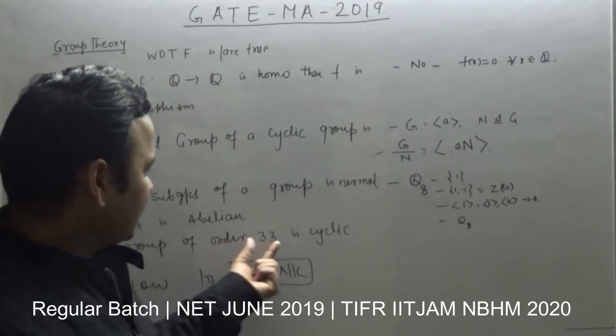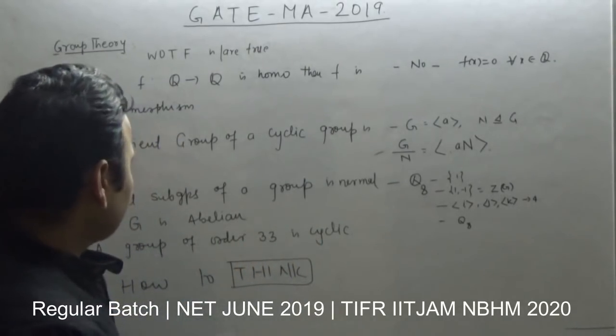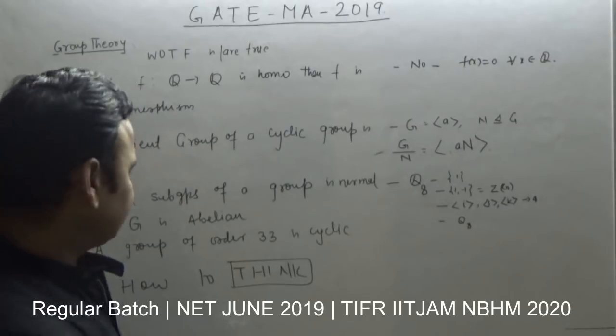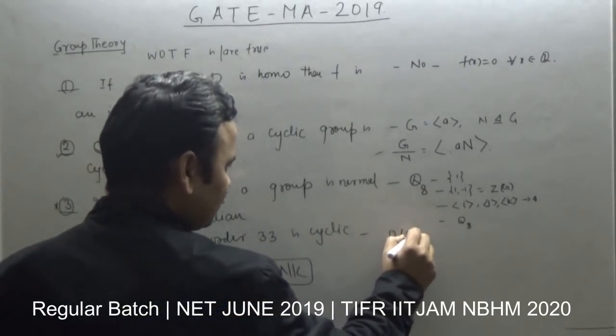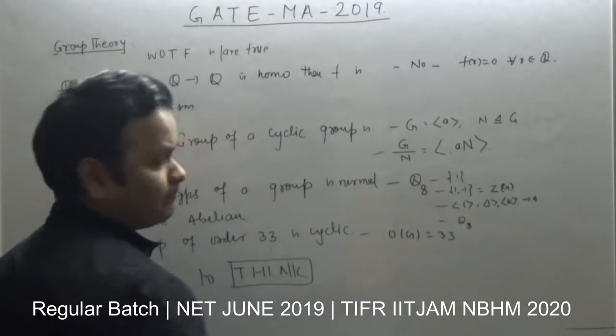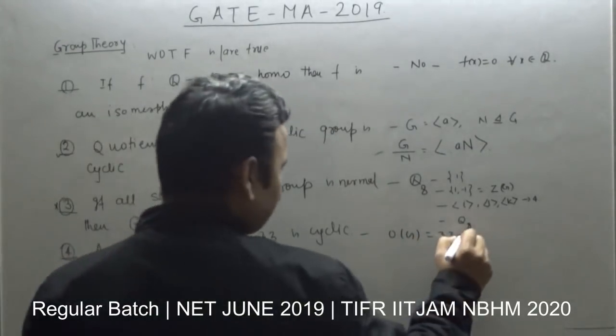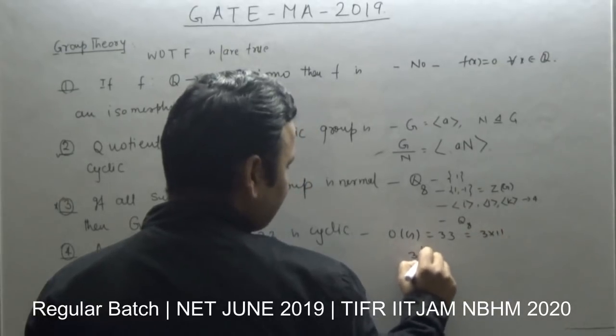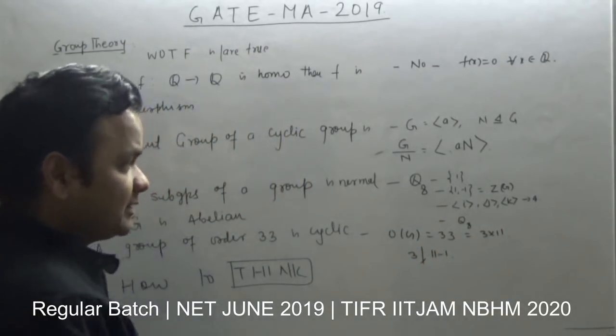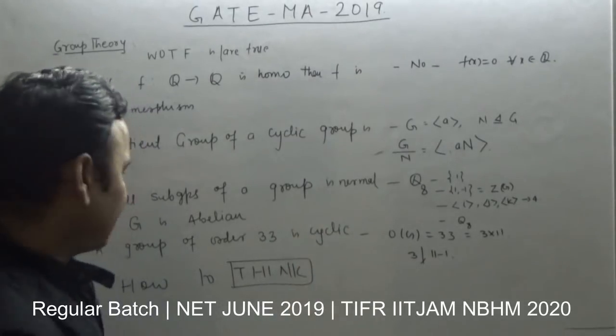A group of order 33 is cyclic. Group of order 33, 33 is nothing but 3 times 11. Look at this: 3 does not divide 11 minus 1, and this group is cyclic.